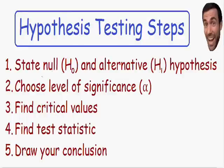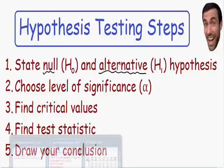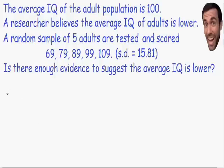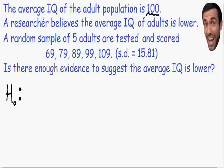It doesn't matter which notation you use. We have to state our null and alternative hypothesis. The null hypothesis is what is currently believed to be true, or what is currently accepted. In this example, the average IQ of the adult population is 100, so the currently accepted value is 100. Therefore, the average of the population mu is equal to 100. This is our null hypothesis, and it's always written with an equal sign.